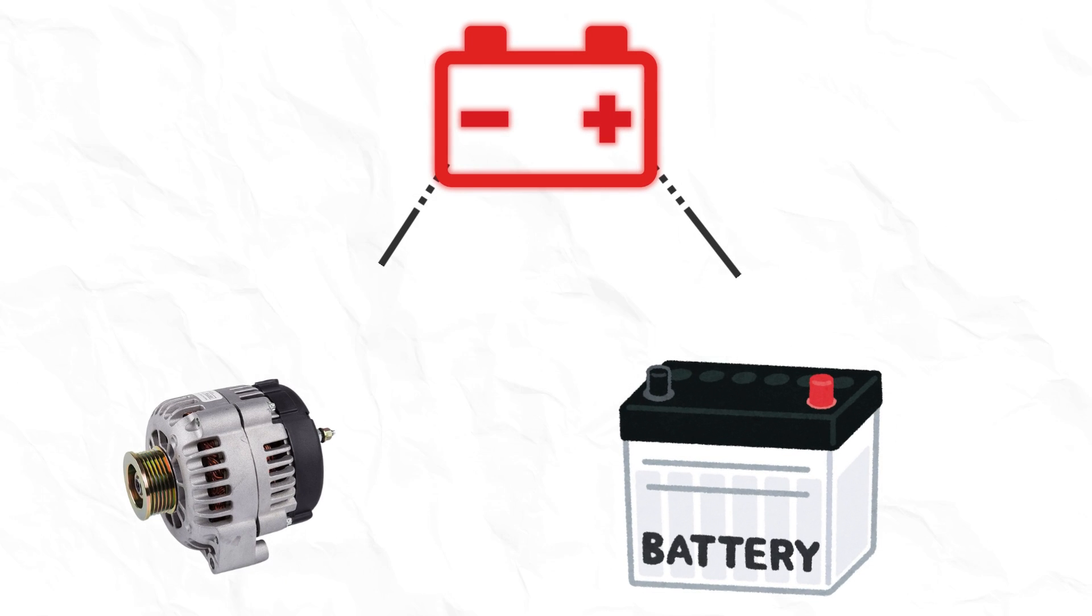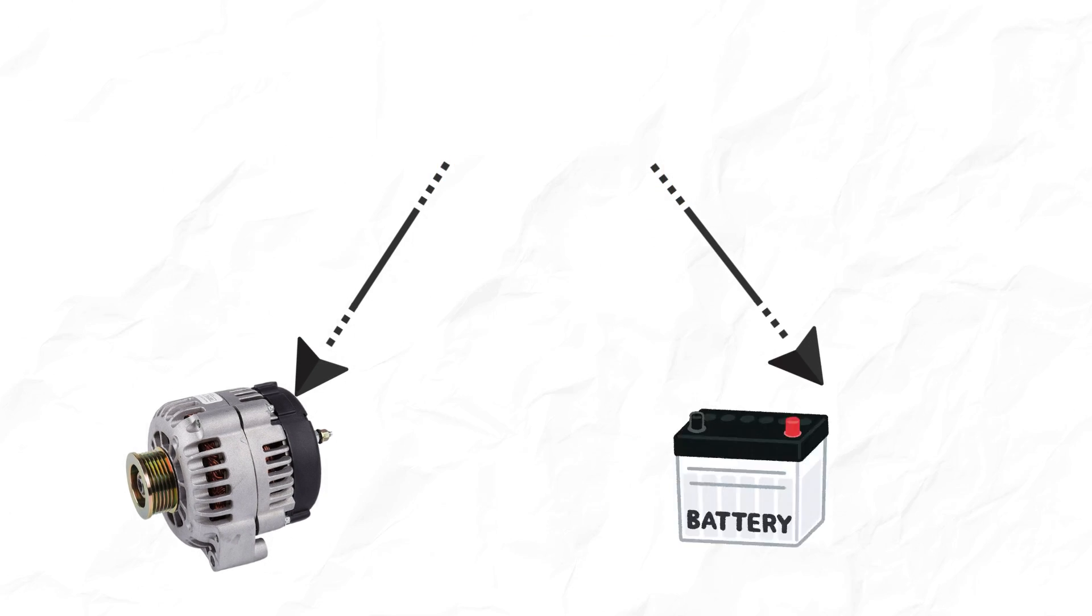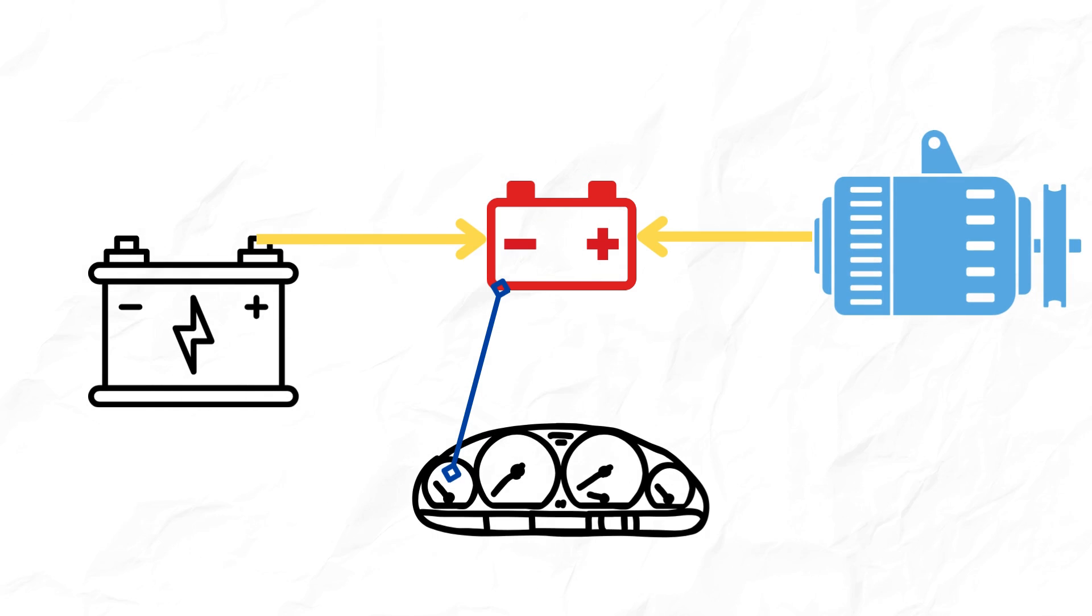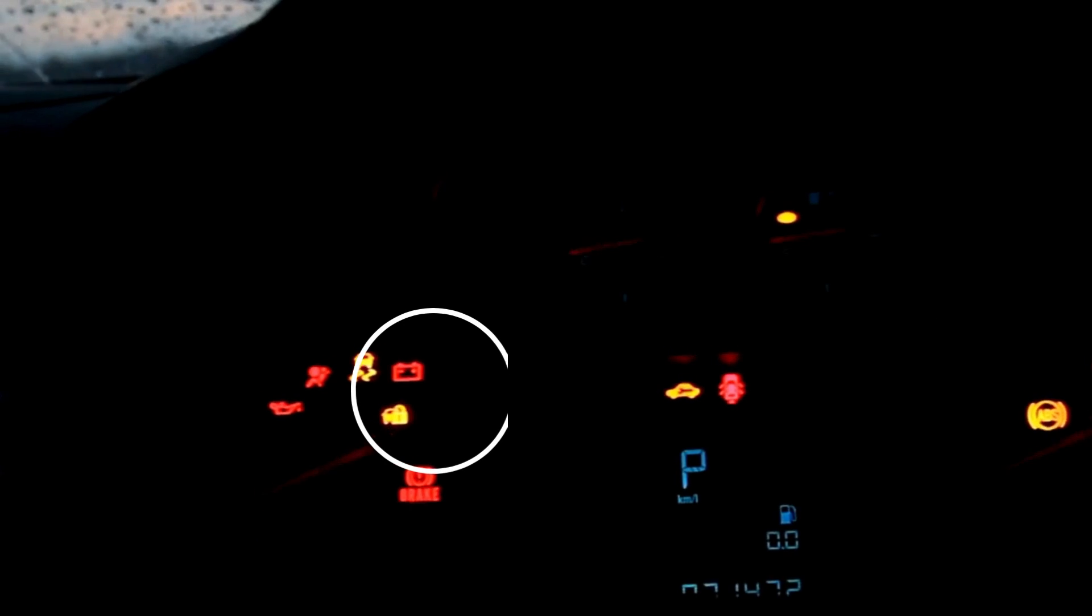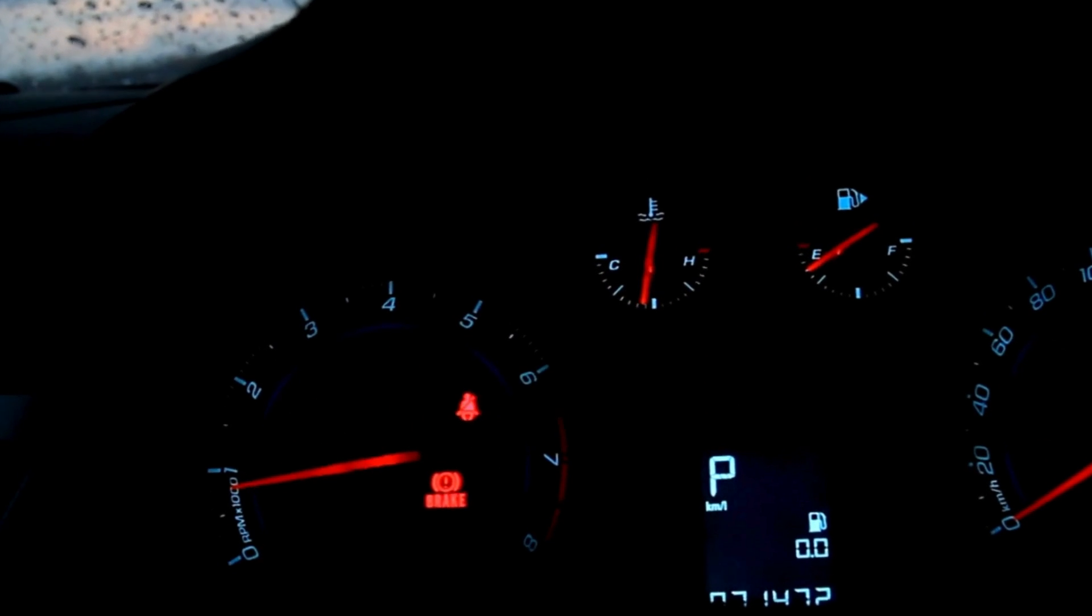The battery light, also known as the charging system light, is directly linked to the alternator and the battery. Its primary purpose is to indicate whether the alternator is providing enough current to charge the battery while the engine is running. Normally, when you start your car, the battery light should illuminate briefly and then go off once the alternator takes over.